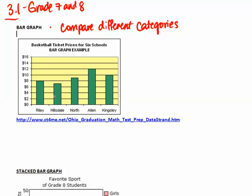For example, in this example we have five different schools and we look at the basketball ticket prices for those schools. We have the price of the ticket on one axis and then we have the five schools. We could actually put these schools in any different order and it would still work for a bar graph.